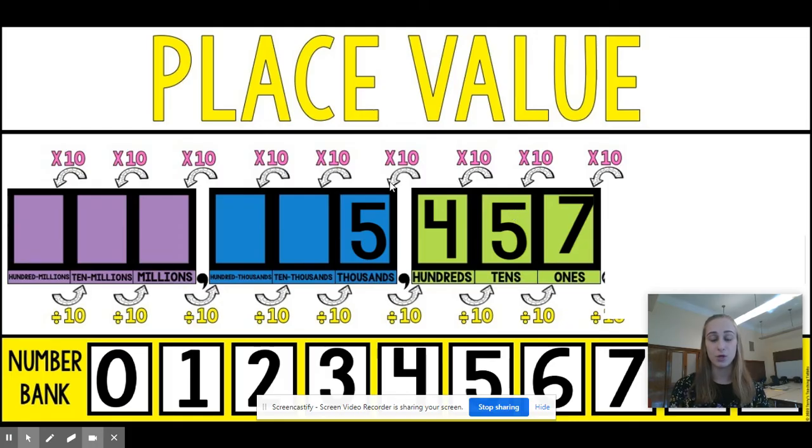You go over two places in the place value chart. And when you do that, the value is not going to be 10 times as much. It's going to be 10 times 10 times, which sounds a little bit confusing. But when you think about it, you can multiply 10 times 10 pretty easily.